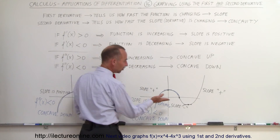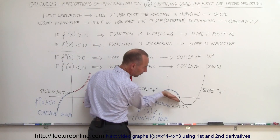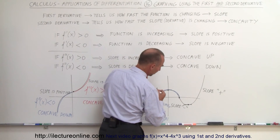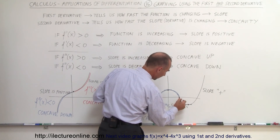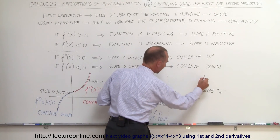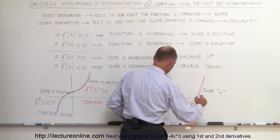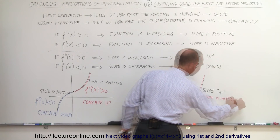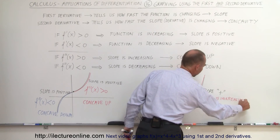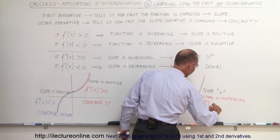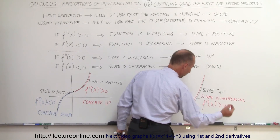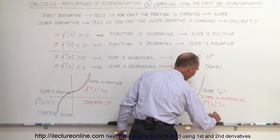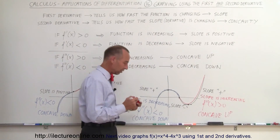From this point out, you can see even though the slope is negative, it begins to increase. For this whole section here the slope is increasing, which means the second derivative of the function is greater than zero — it's positive — which means this is concave up, because the slope is increasing.